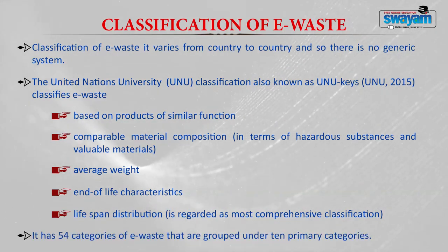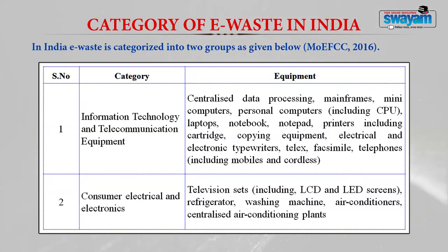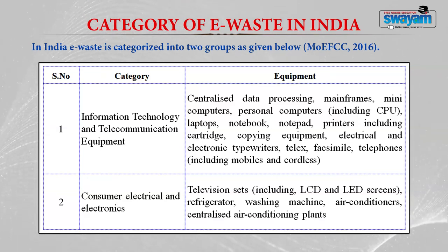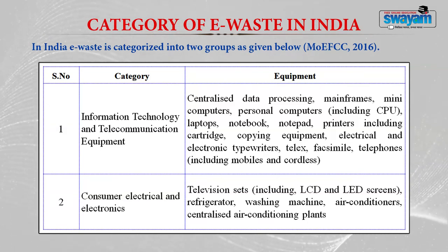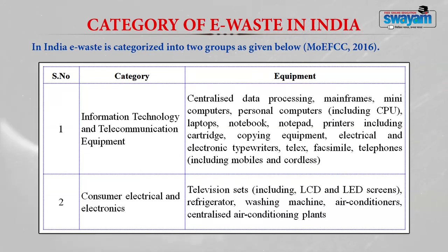The UNU system has 54 categories grouped under 10 primary categories. In India, the Ministry of Environment, Forest and Climate Change has categorized e-waste into two groups: information technology and telecommunication equipment — including mainframes, personal computers, CPUs, laptops, printers, copying equipment, typewriters, and telephones — and consumer electrical and electronic items, including television sets, LCD and LED screens, refrigerators, washing machines, and air conditioners.